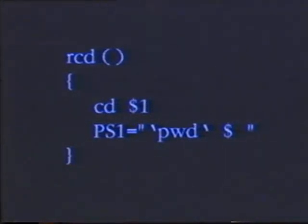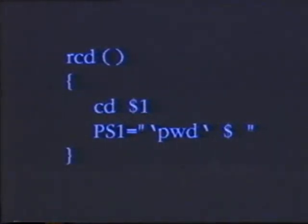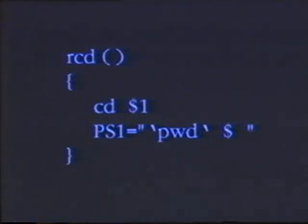Once I've changed to that directory, I want to redefine the prompt so that it holds the now new current directory. I can do that by running the pwd command and assigning the result to PS1. This requires the use of backquotes because I want to store the output of pwd into PS1. That line looks like this: PS1="`pwd` $ " — those additional spaces are there so that there's spacing on the other end of my prompt.